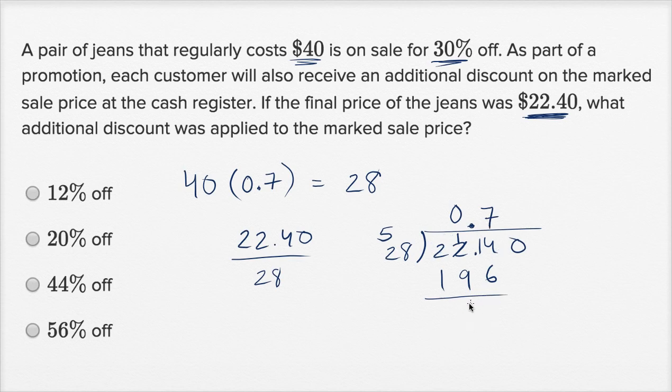So let's see, this is going to go, 28 goes into 224 exactly eight times. Eight times eight is 64. Eight times two is 16, plus six is 22. No remainder.